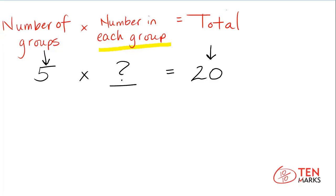To find how many are in each group, you can use a visual model similar to the one that we worked in the first problem. In this special kind of a model called an array, the number of rows represents the number of groups. Since we have five groups, I will make five rows.